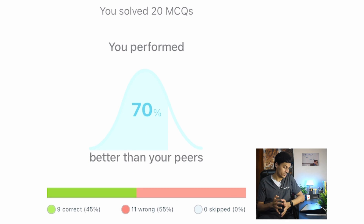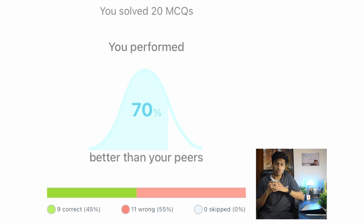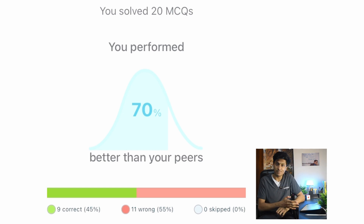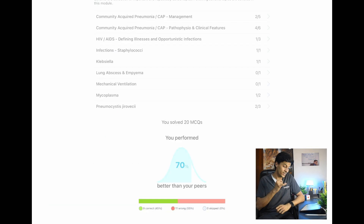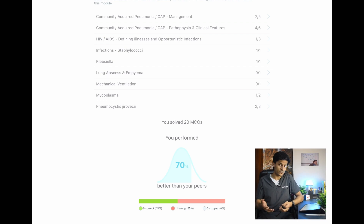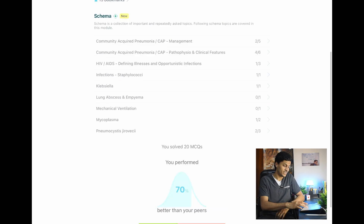So here's the Pneumonia QBank — I've gotten 9 correct and 11 wrong, yet I've performed better than 70% of all peers. This tells us the QBank was inherently tough with unknown questions — even after getting so many wrong, I'm still in the 70th percentile. If you got many wrong and the percentile is also low, that means your concept is getting weaker and you need to focus on it. But here, 70% is fairly good, so I just needed to review it.